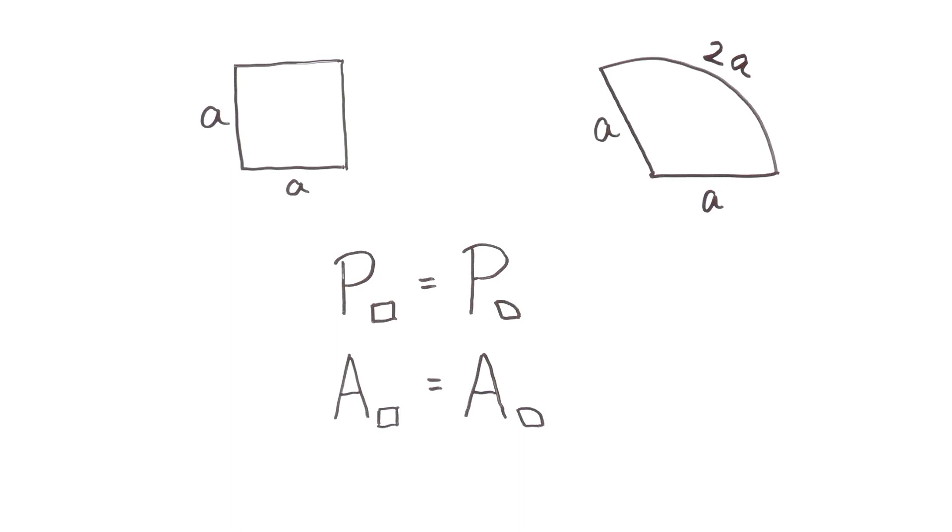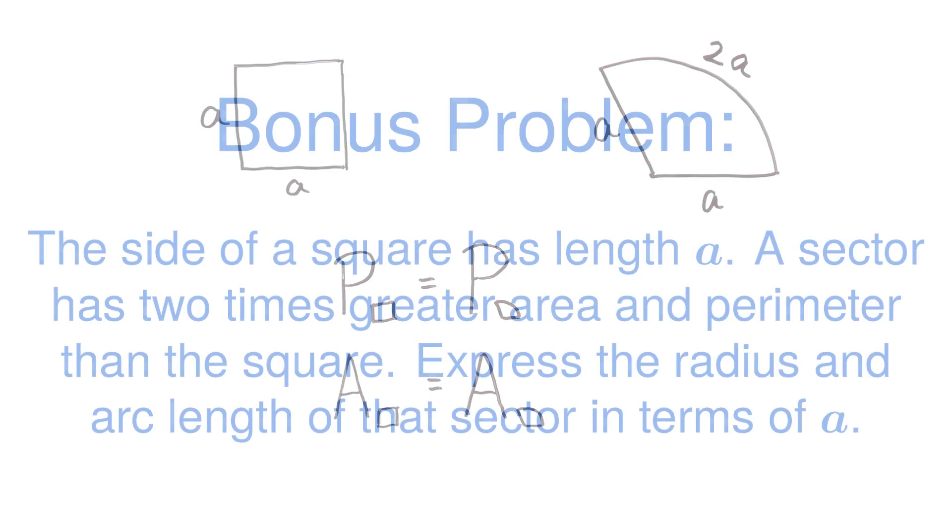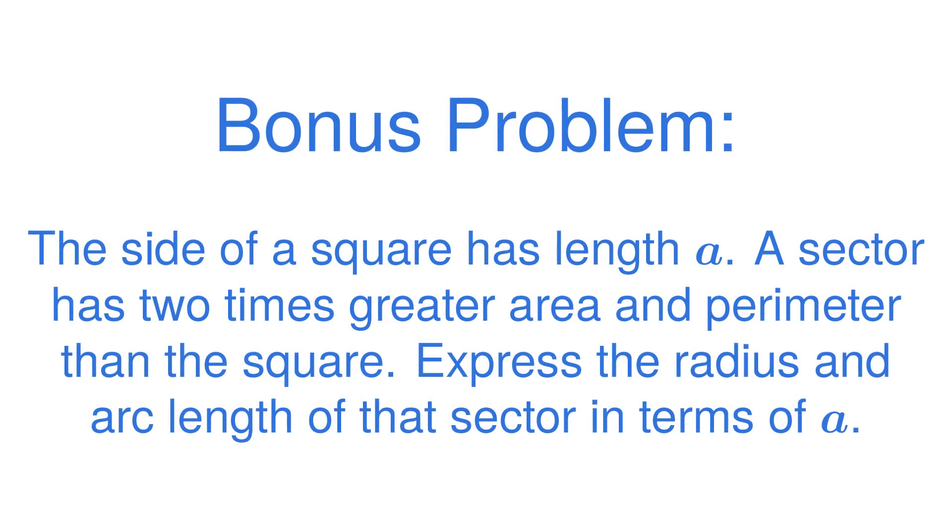With that in mind I leave you with this problem. The side of a square has length A. A sector has 2 times greater area and perimeter than the square. Express the radius and arc length of that sector in terms of A.